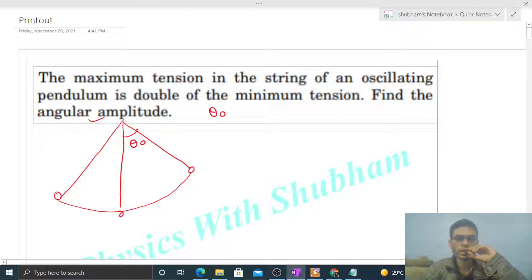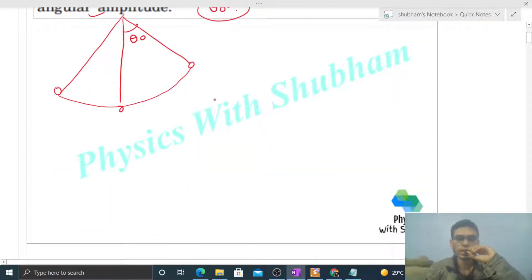So theta naught is the value we need to find out. If I draw the free body diagram of this pendulum at some general position theta, let's say at this position the speed of the pendulum is v. At an angle theta from the vertical, how many forces are acting?